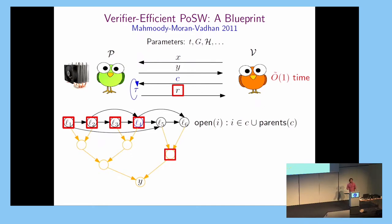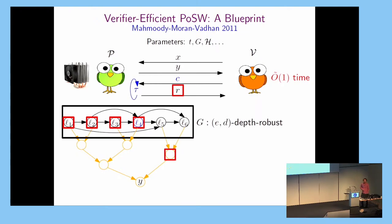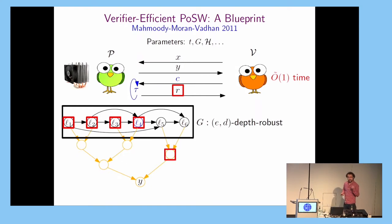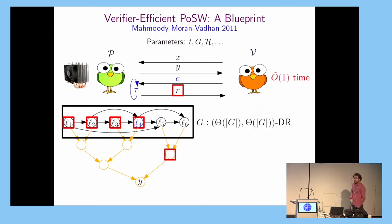But where's the sequentiality of work? There's no sequentiality here yet. This comes down to the kind of graphs being used. In their instantiation they use graphs called depth-robust graphs. These are graphs in which if you remove e nodes, the remaining graph still has a path of length d. They have very good parameters — the graph size is also t — and they have polylogarithmic degree.